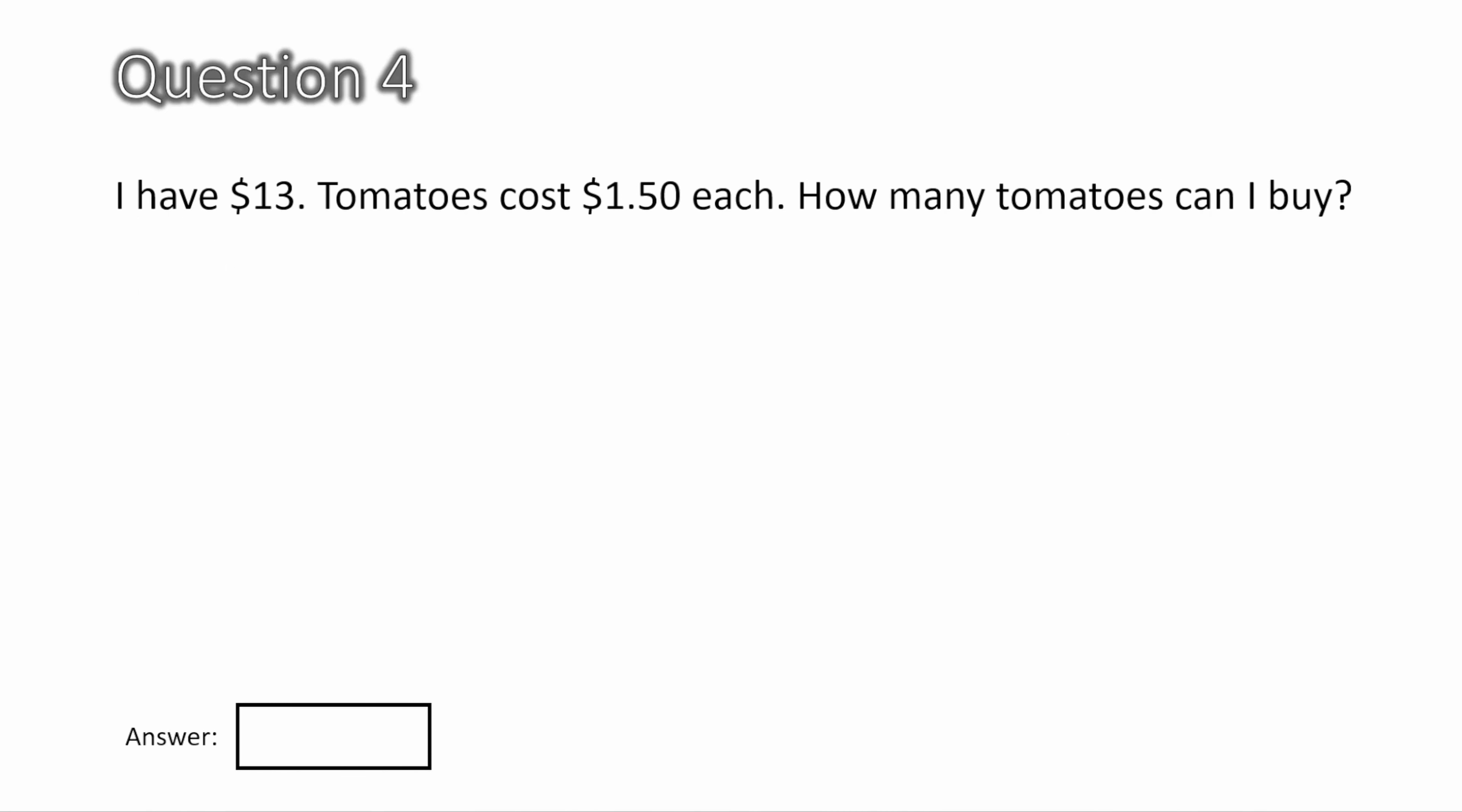Question four. I have $13. Tomatoes cost $1.50 each. How many tomatoes can I buy? Okay, this is a division problem, and we know that because we're finding out how many tomatoes valued at $1.50 will go into the $13. So we write that out as 13 divided by $1.50, and it's not $1.50, well it can be $1.50, because the 0 at the end of a decimal has no value, so we can get rid of it. It's a bit hard to do 13 divided by 1.5, because 1.5 is a decimal. So if we multiply both sides by 10, we can make them both whole numbers. So that would make it 130 divided by 15.